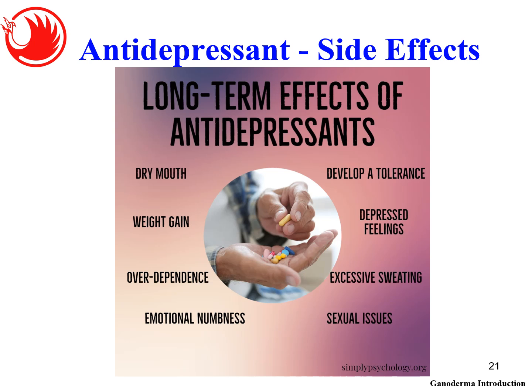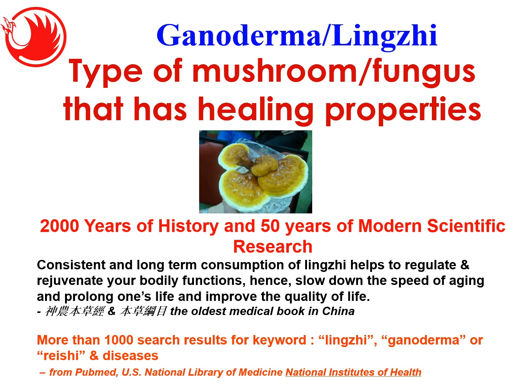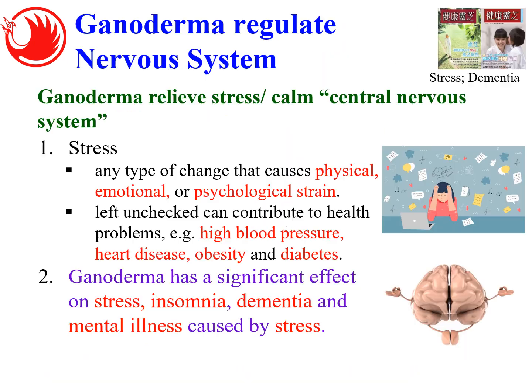Moving on to one of the products we introduce today: Ganoderma. What is Ganoderma? Ganoderma is a type of mushroom or fungus that has healing properties. Ganoderma has 2,000 years of history, effectively consumed by Chinese people, and its efficacy is recorded in two of the old medical books in China: Shennong Bencao Jing and Bencao Gangmu. For the past 50-plus years, a lot of research has been done on Ganoderma, and you can find all these research papers on the website PubMed, the US National Library of Medicine, National Institute of Health. All the benefits of Ganoderma on health are recorded there. We will cover how Ganoderma addresses some of the functions that the drugs mentioned, and how Ganoderma counteracts their side effects.